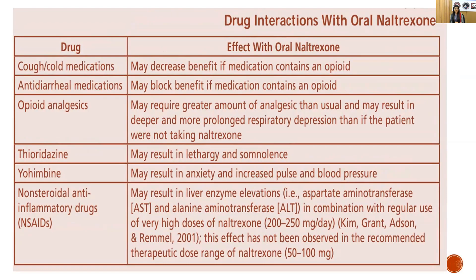Drug interactions to note: cough and cold medications, anti-diarrheal medications, and opioid analgesics all contain opioid components, so caution is needed when combining with this opioid antagonist. Thioridazine may result in lethargy and somnolence. Yohimbine, an alpha-adrenergic agonist, may result in anxiety and increased pulse and blood pressure. NSAIDs may cause differences in liver enzyme levels or elevation of liver enzymes, which is a concern with naltrexone.